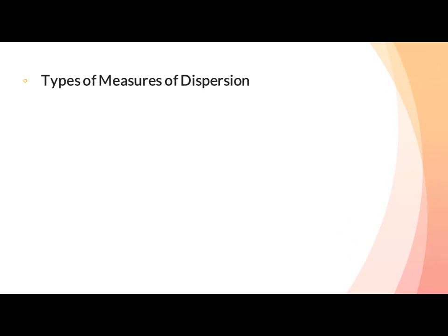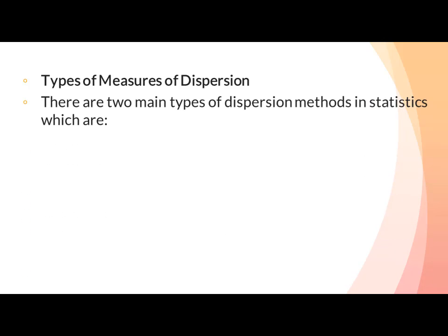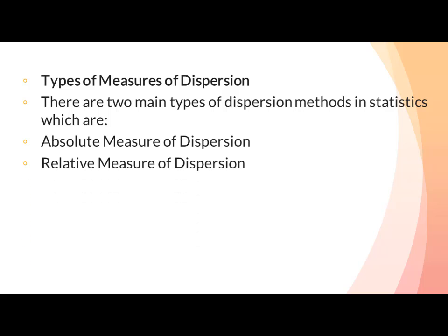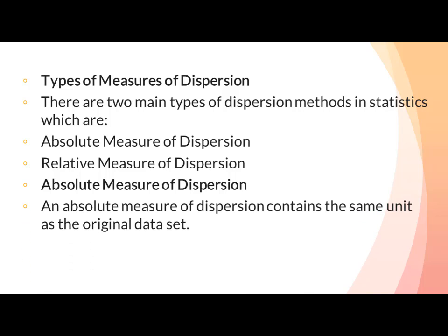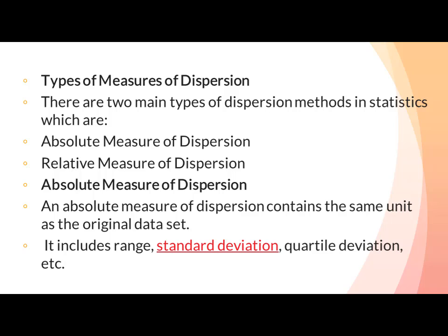Types of measures of dispersion: there are two main types of dispersion methods in statistics, which are absolute measure of dispersion and relative measure of dispersion. An absolute measure of dispersion contains the same unit as the original data set. It includes range, standard deviation, quartile deviation, etc.